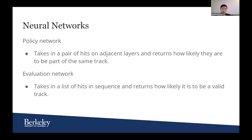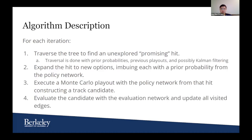There are two neural networks primarily at work here. There's a policy network, which is simple — it takes in a pair of hits in a sequence and returns how likely they are to be part of the same track. We use this to assign prior probabilities for a new hit we're considering for our track candidate. And there's the evaluation network, which takes an entire list of hits in a sequence and returns how likely it is to be a valid track. It's probably more useful if I just walk through an example.